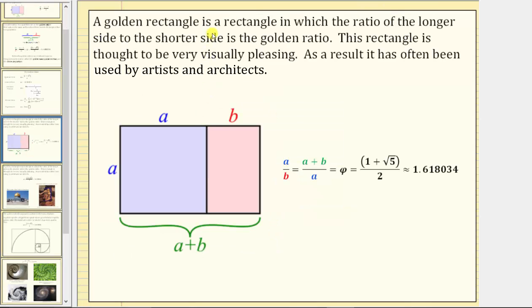A golden rectangle is a rectangle in which the ratio of the longer side to the shorter side is the golden ratio. A golden rectangle is pictured here. This rectangle is thought to be very visually pleasing. As a result, it has often been used by artists and architects.